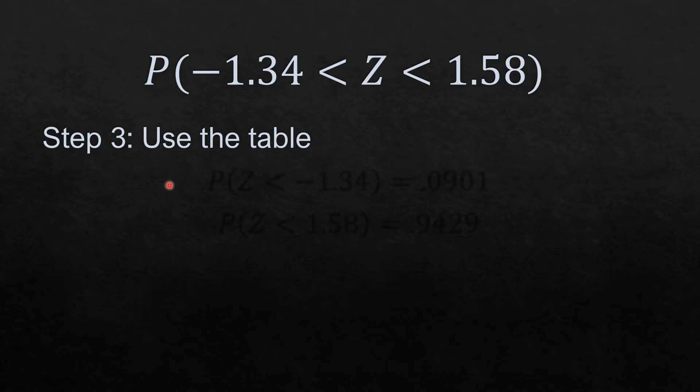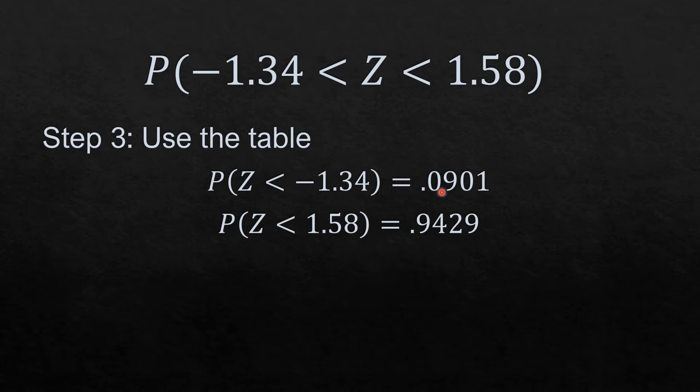Here we have the probability that Z is less than negative 1.34 is 0.0901, and the probability that Z is less than 1.58 is 0.9429.